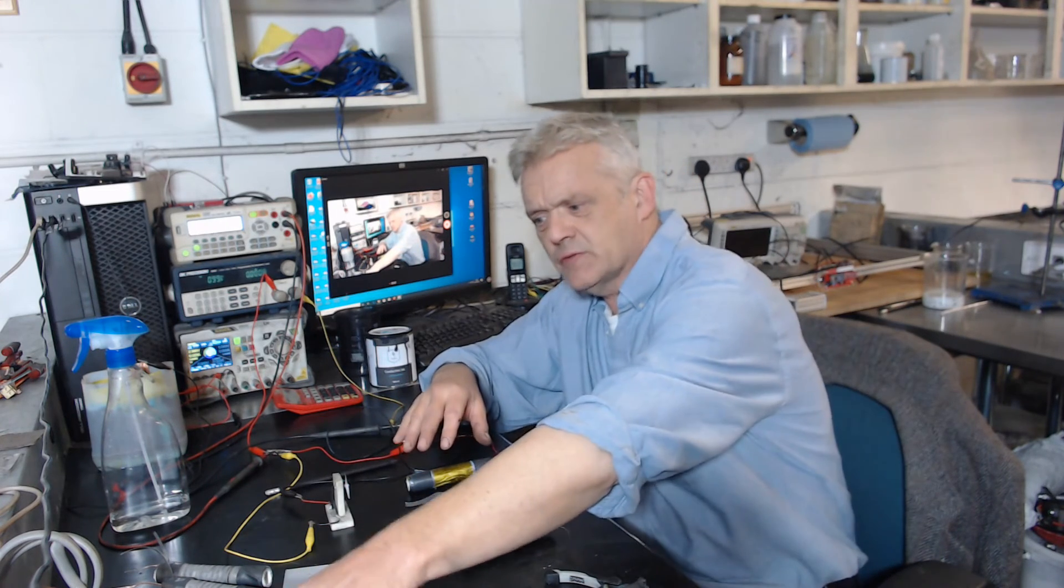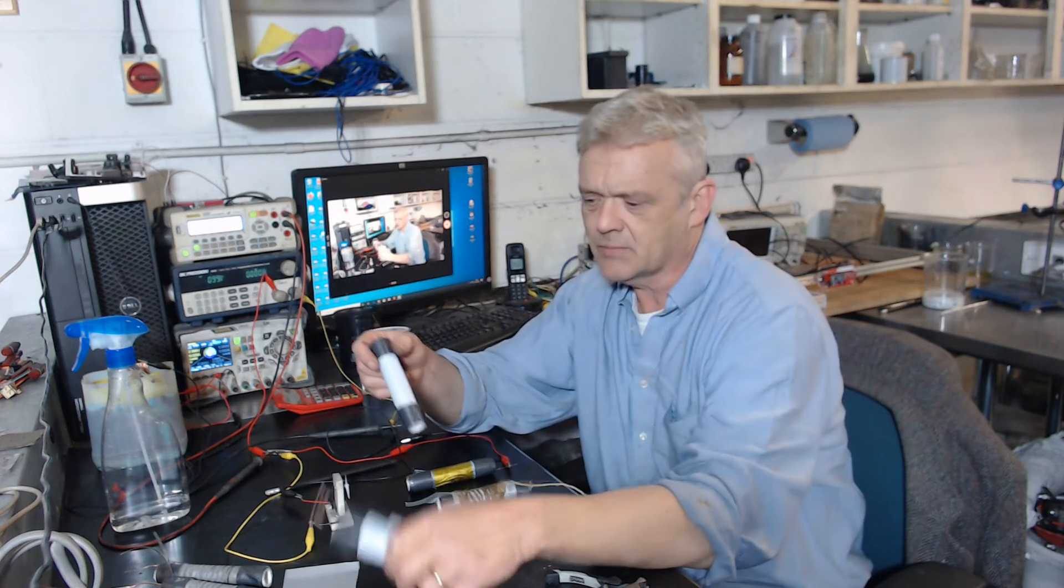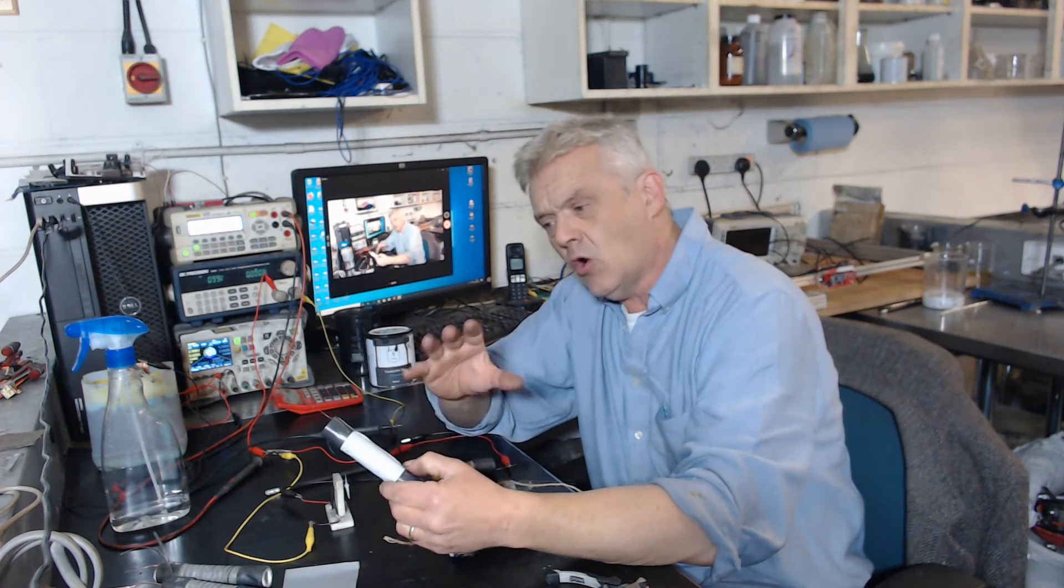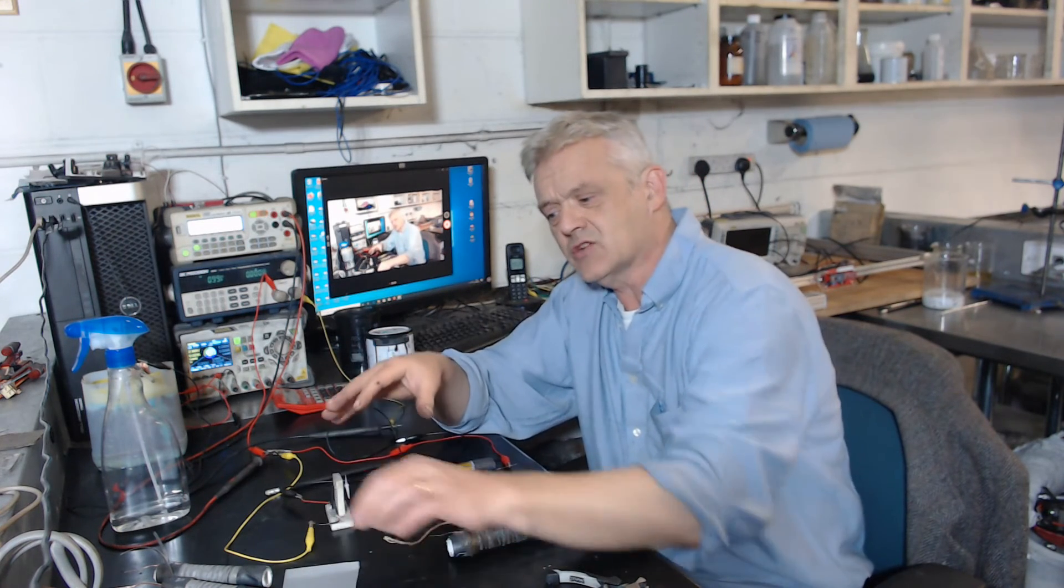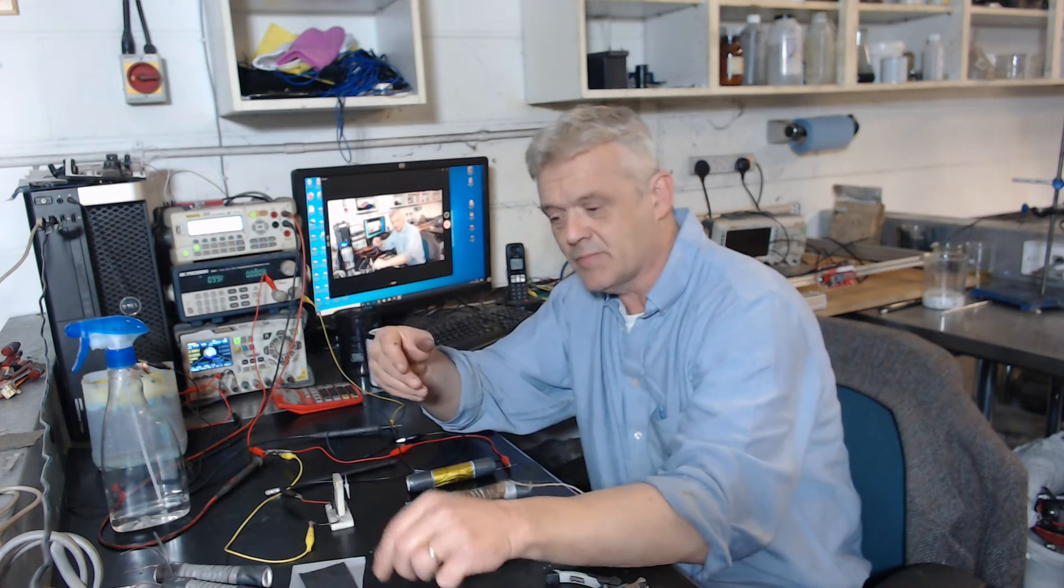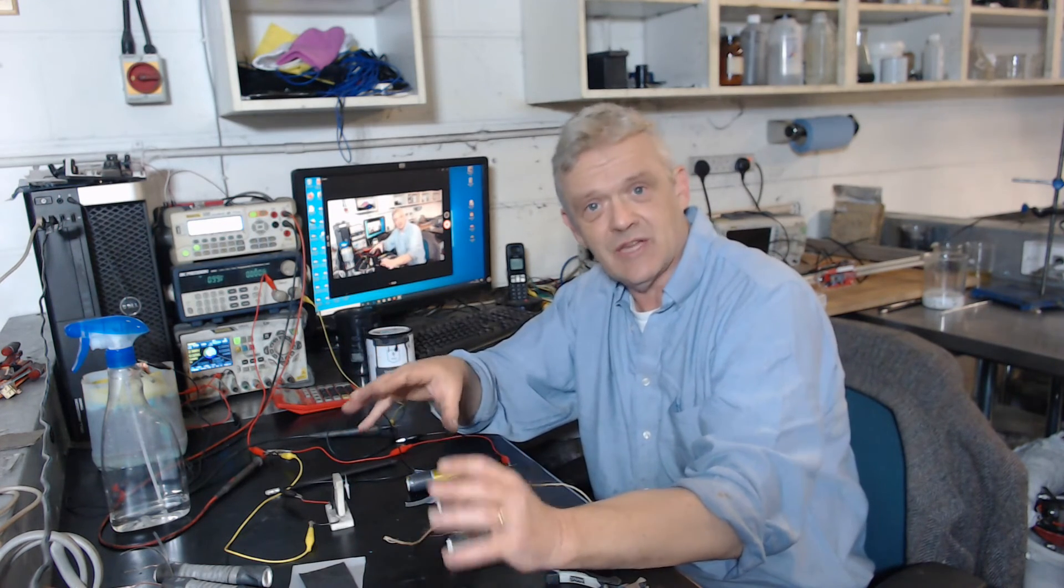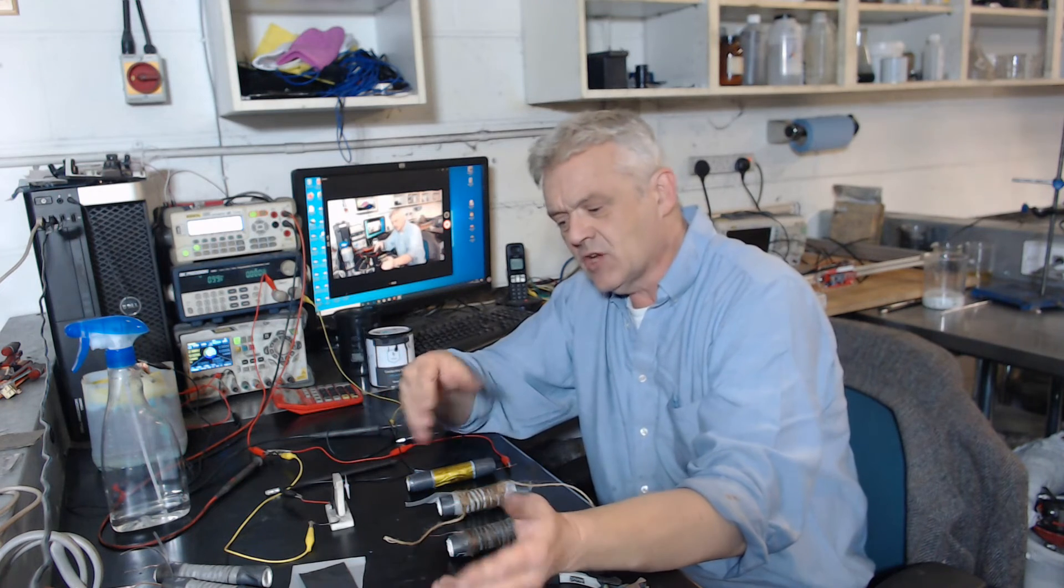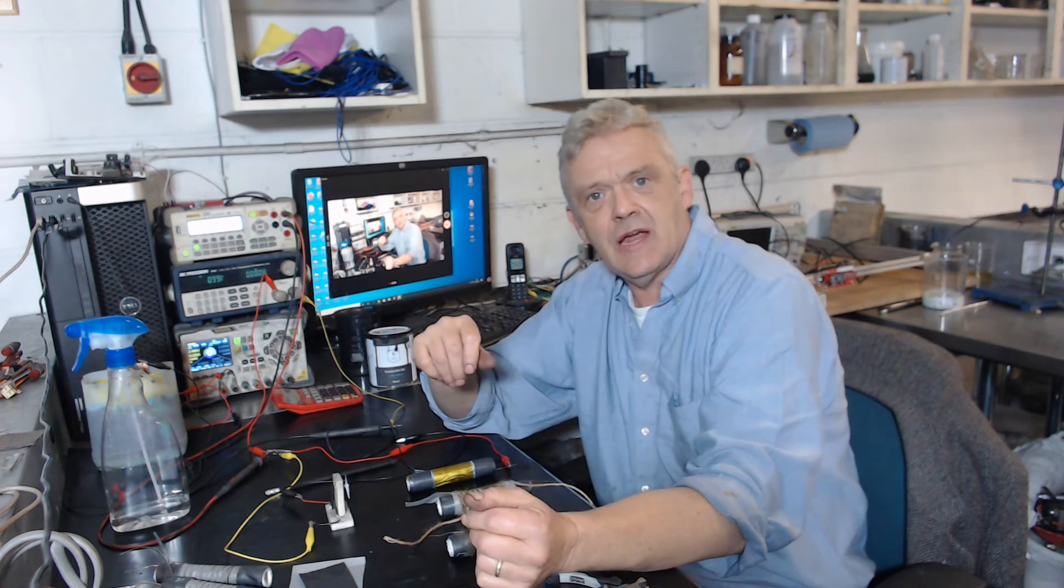They're all made the same. All that cathode is: carbon cloth wrapped around the pipe with a bit of wire on it. That's what the air cathode is. Having done that, the metal anode can be changed, just